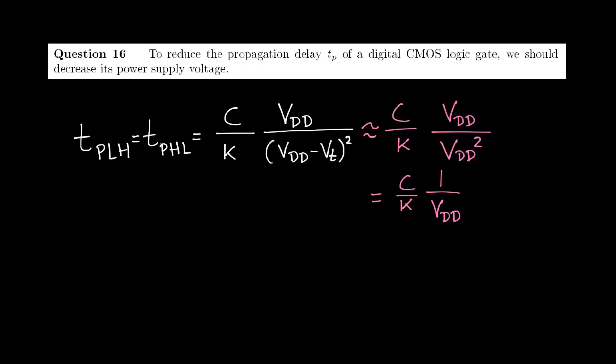The propagation delay scales with the inverse of VDD for very high values. So, from that we can conclude from this model that to reduce the propagation delay, we should actually increase our VDD.